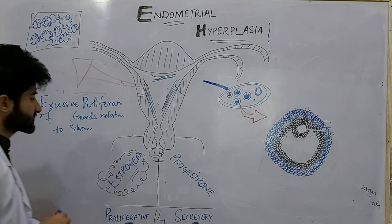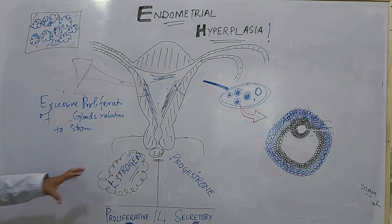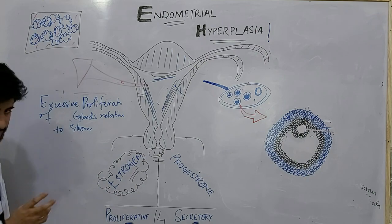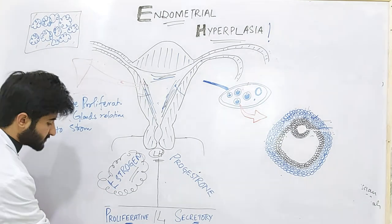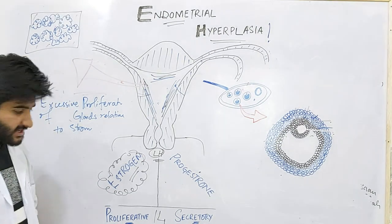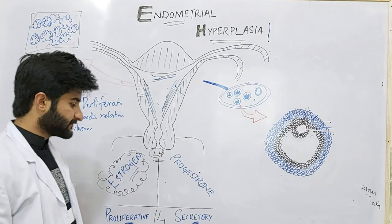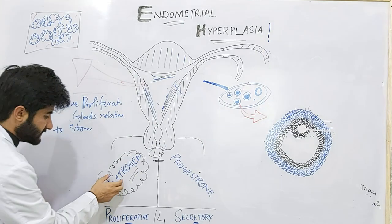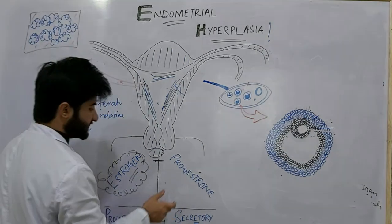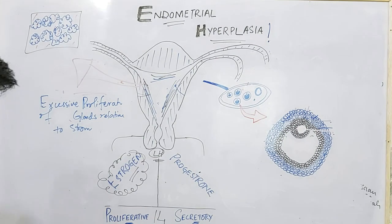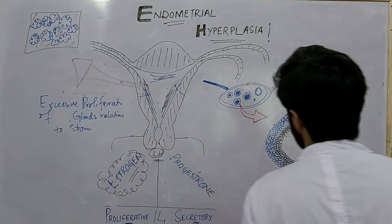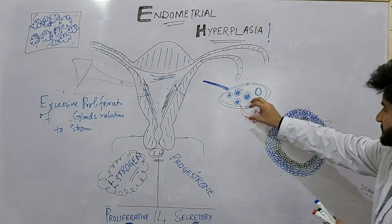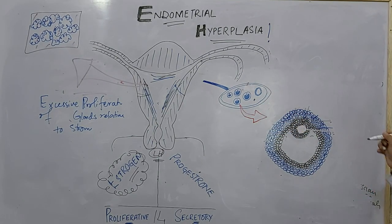To understand this condition, let's rewind our physiology. In the menstrual cycle, the first 14 days comprise the proliferative phase and the next 14 days comprise the secretory phase. The proliferative phase is guided by the estrogen axis, whereas the secretory phase is guided by the progesterone axis.